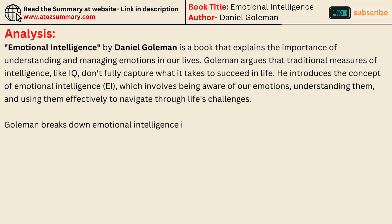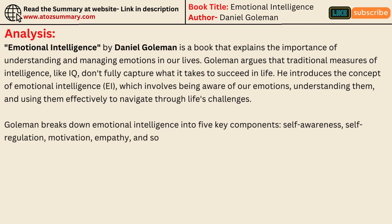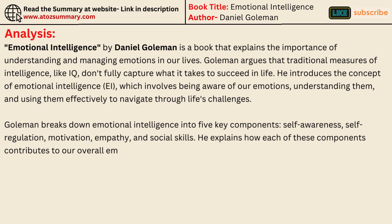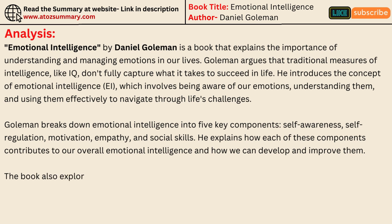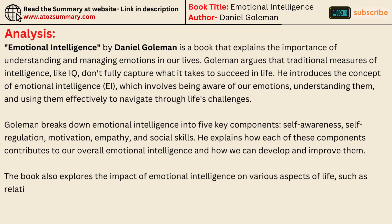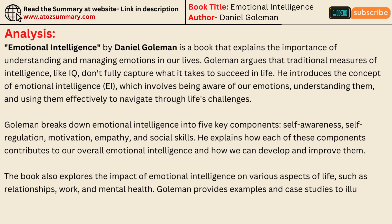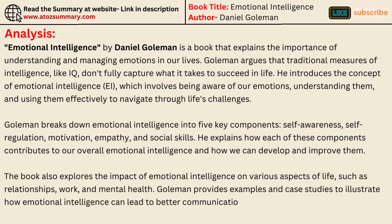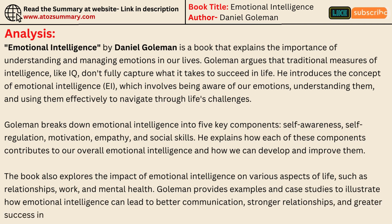Goleman breaks down emotional intelligence into five key components: self-awareness, self-regulation, motivation, empathy, and social skills. He explains how each of these components contributes to our overall emotional intelligence and how we can develop and improve them. The book also explores the impact of emotional intelligence on relationships, work, and mental health, providing examples and case studies to illustrate how EI can lead to better communication, stronger relationships, and greater success in both personal and professional settings.